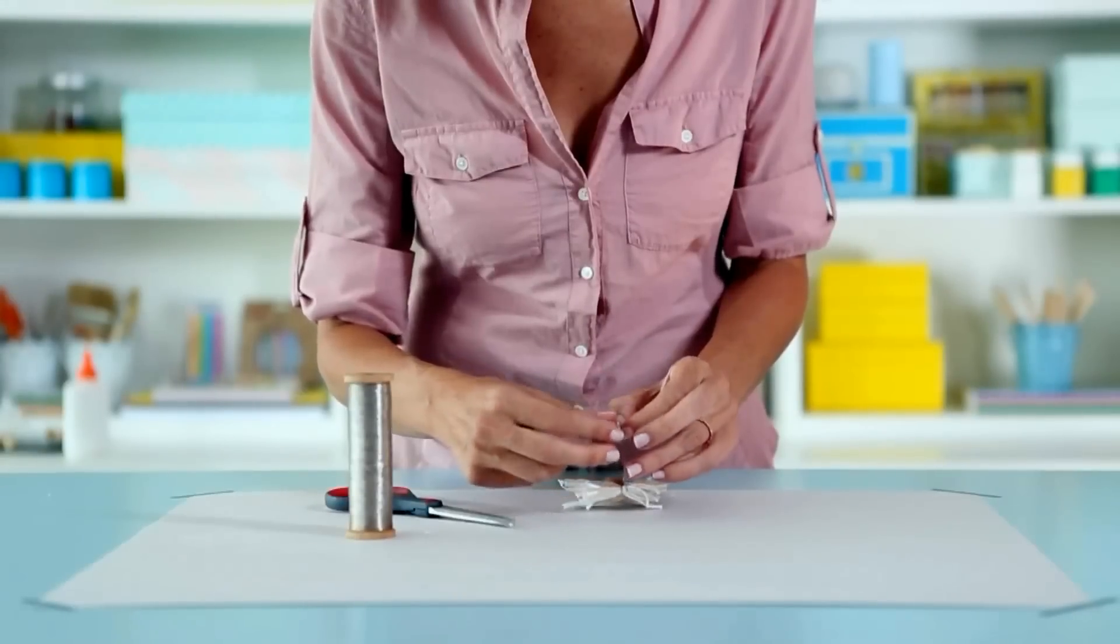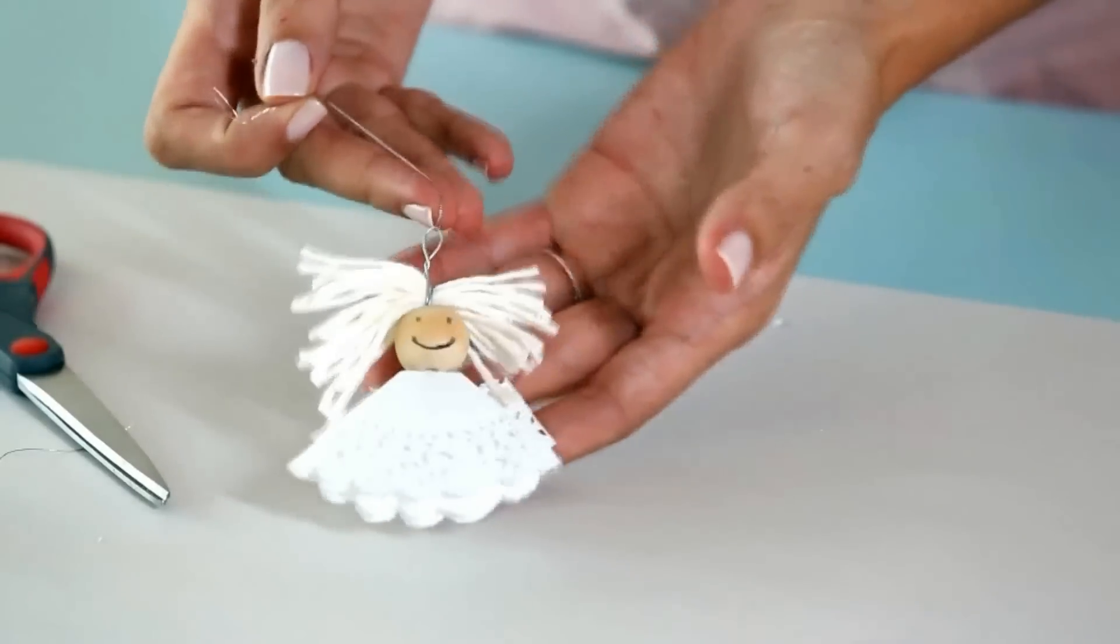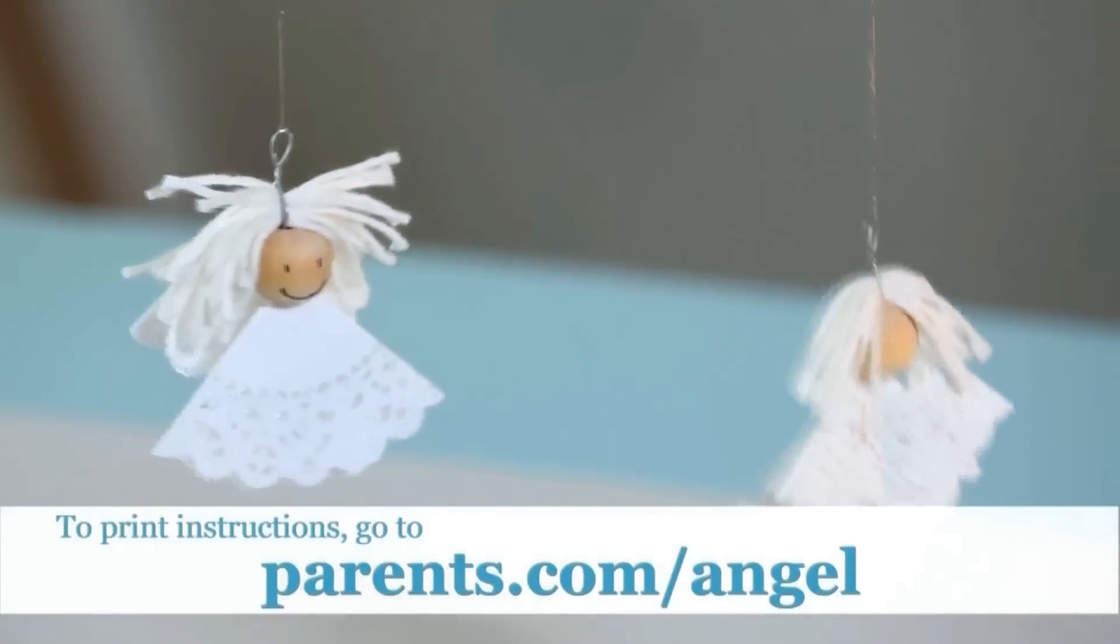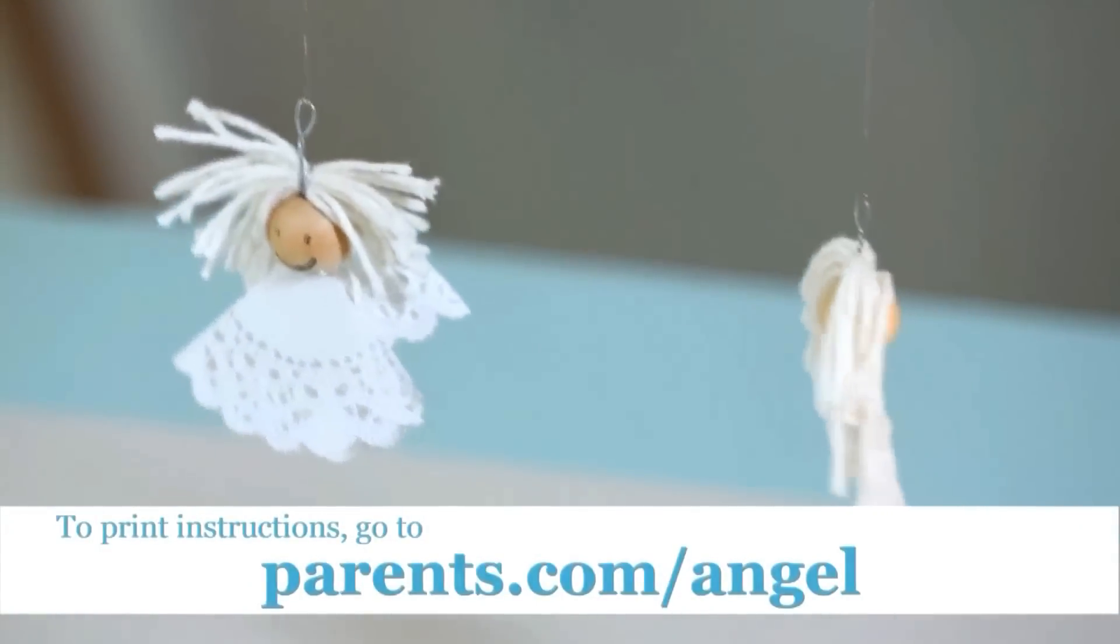Twist the top of the wire into a loop and add a thin string to hang it from your tree. And that's it. Just a few simple steps to make this sweet little angel ornament for your Christmas tree.